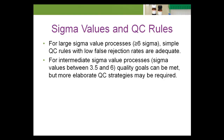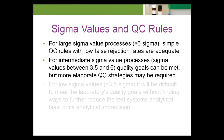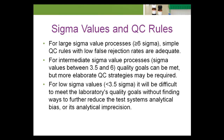For intermediate sigma value processes — sigma values between 3.5 and 6 — quality goals can be met, but more elaborate QC strategies may be required. For low sigma values less than 3.5, it will be difficult to meet the laboratory's quality goals without finding ways to further reduce the test system's analytical bias or its analytical imprecision.